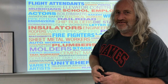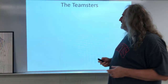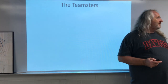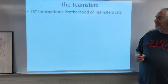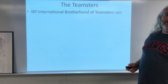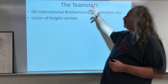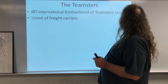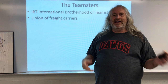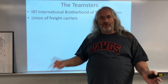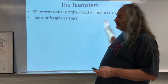The last thing we'll talk about today is a very infamous group who formed a union called the Teamsters, known as the IBT or International Brotherhood of Teamsters, created in 1803. This is a union of freight carriers — the name 'Teamsters' comes from the fact that in 1803, if you were moving freight you were probably moving it by wagon, and wagons were pulled by a team of horses.